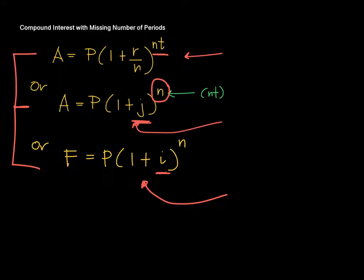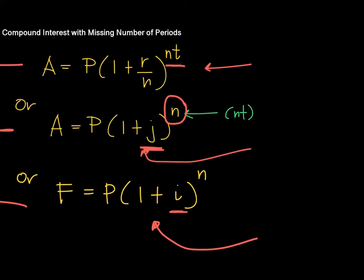But when we're looking for the number of periods, here is what I want you to keep in mind. The number of periods is basically the exponent. So, in this case, it's the NT. Here it's the N. Here it's also the N.